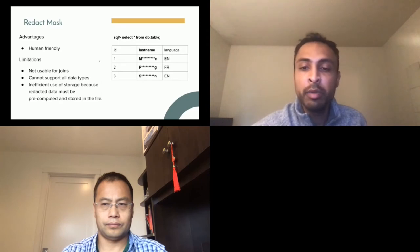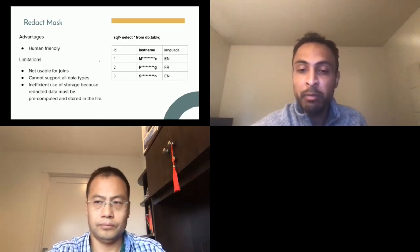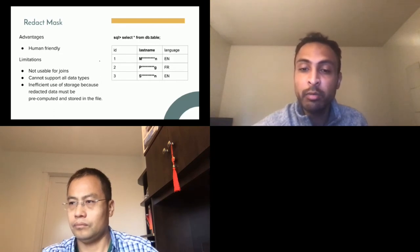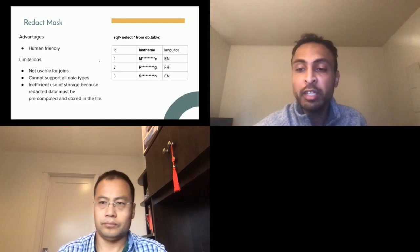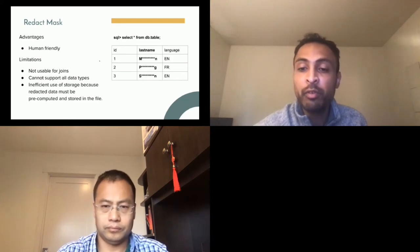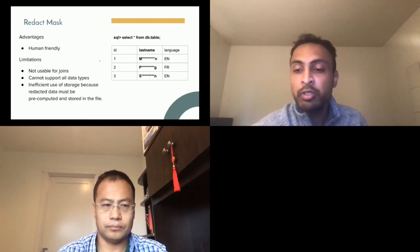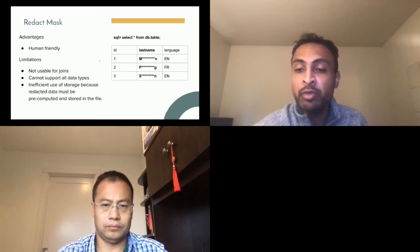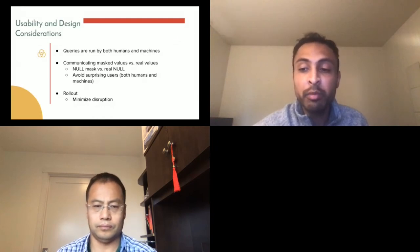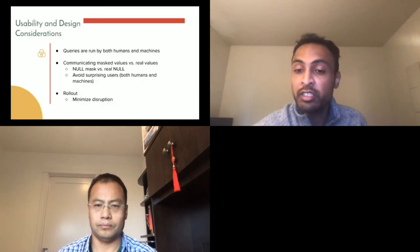Here are some usability and design considerations as we build out this POC feature. First, queries in a typical data ecosystem are run by both humans and machines — data masking might be intuitive to a human but may cause issues with automated systems, so any solution needs to be flexible for both use cases. Second, clear communication between masked values and real values is important — we don't want to surprise users with masked values when they expect real ones. Lastly, rollout needs to minimize disruption, as rolling out without a well-thought-out strategy could break things since we're modifying query results.